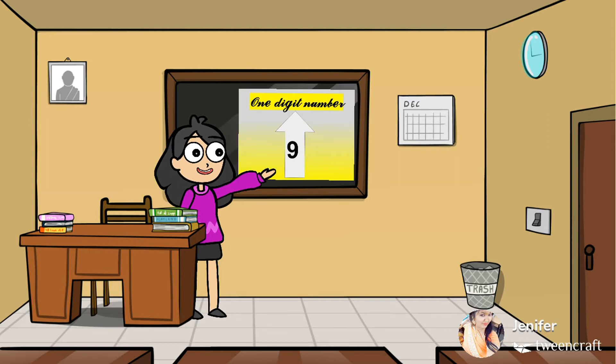Students, which number is this? Yes, this is 9. 9 is also 1 digit number. But it is the biggest number of 1 digit. That is 9.